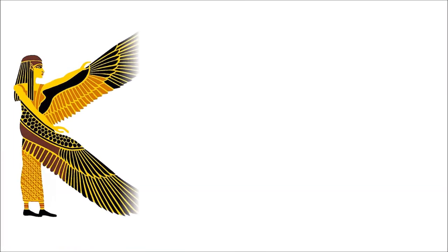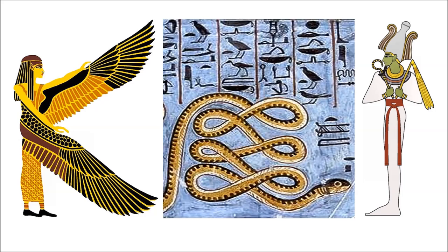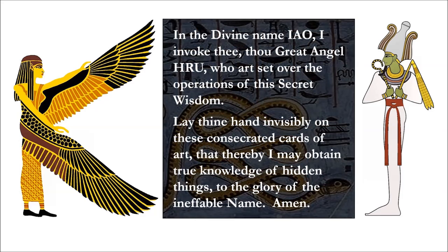Now for the invocation of Haru. It begins: 'In the divine name of IAO' — that's magic, the cycle of life and death, and the chaos in between. Haru, H-R-U, is the name of the great angel or guardian spirit of the tarot, the operations of the secret wisdom. There is a reason this pre-tarot divination invocation work is emphasized by the Golden Dawn and the many generations of Western ceremonial magicians that have come before us.